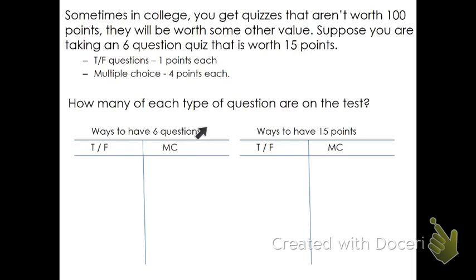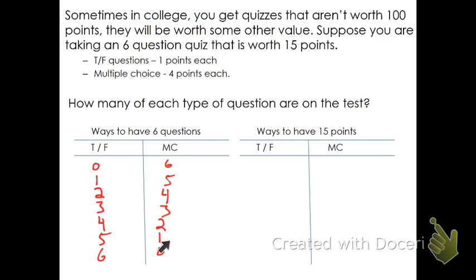Let's first figure out all the ways we can have six questions. You could have zero true-false and six multiple-choice, one true-false and five multiple-choice, two true-false and four multiple-choice — and that pattern goes all the way down to six true-false and zero multiple-choice. There are a lot of different ways to have six total questions.